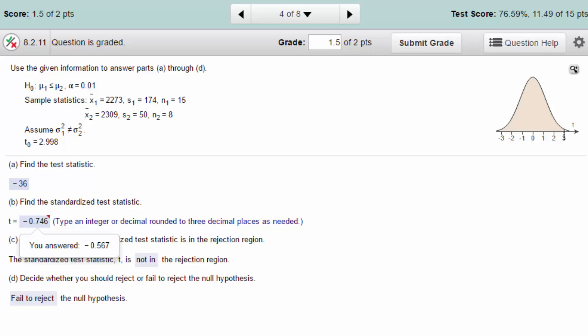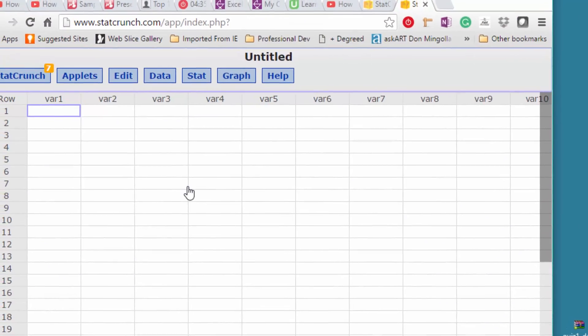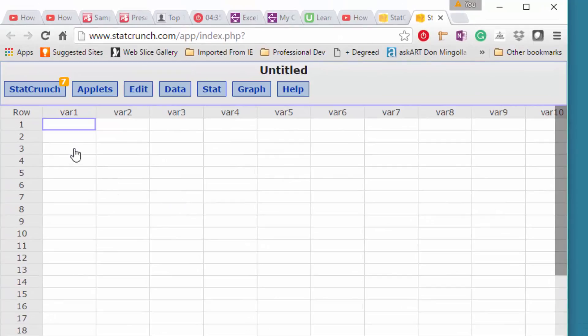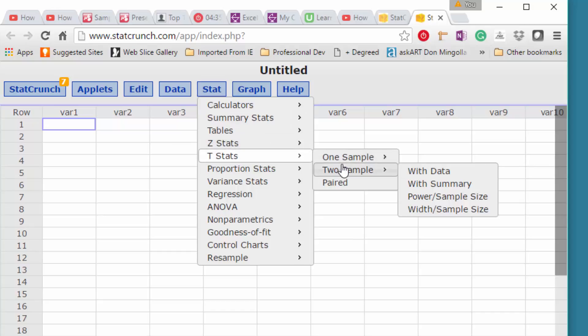So let's go ahead and bring up StatCrunch. We need to enter, well, first of all we're going to go to Stat and we're doing t-Stats and this is two sample with summary.